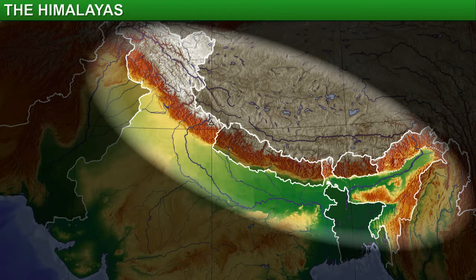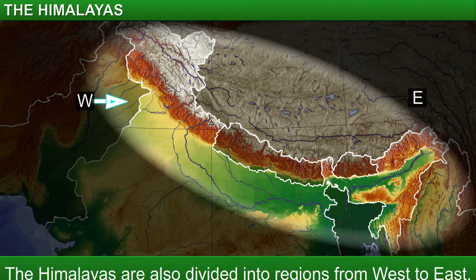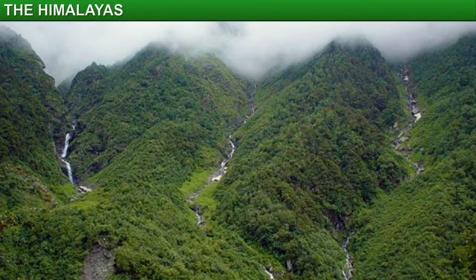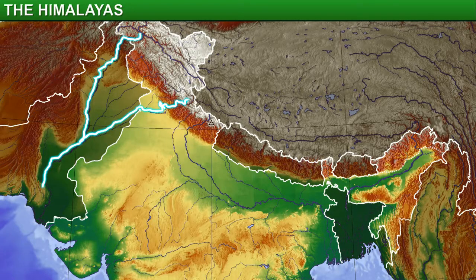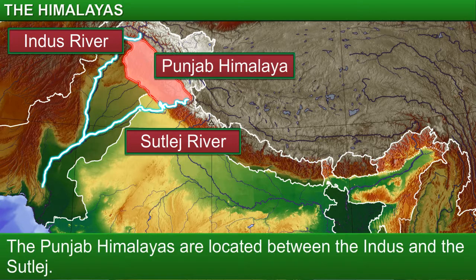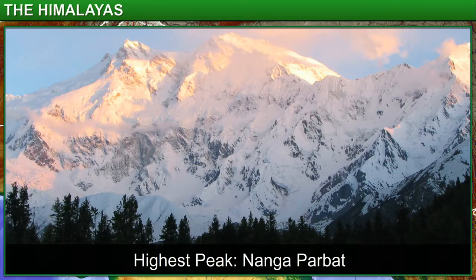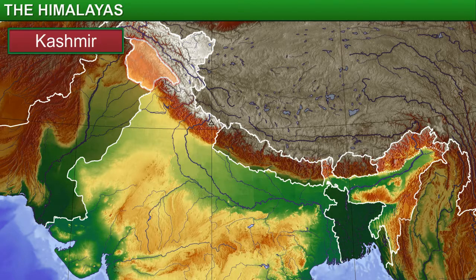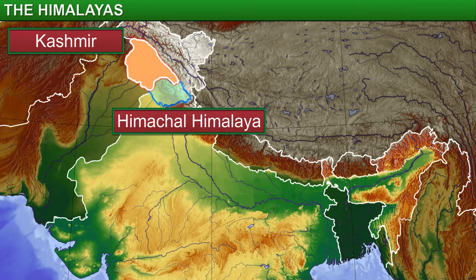We just looked at the longitudinal divisions of the Himalayas. The Himalayas are also divided into regions from west to east. You can make out these regions by looking at the demarcations between river valleys. The area between the Indus and the Sutlej has been traditionally known as the Punjab Himalaya. Nanga Parbat is the highest peak in the Punjab Himalaya. However, on the basis of regional divisions, locally it is also called Kashmir in the west and Himachal Himalaya in the east.